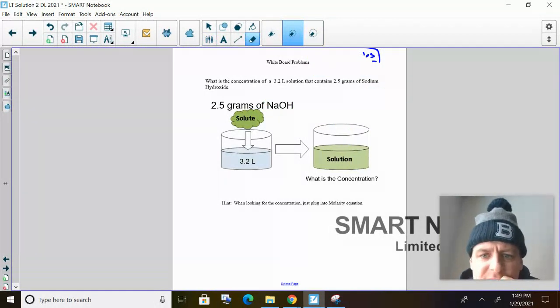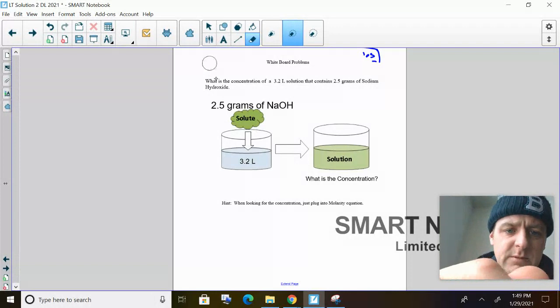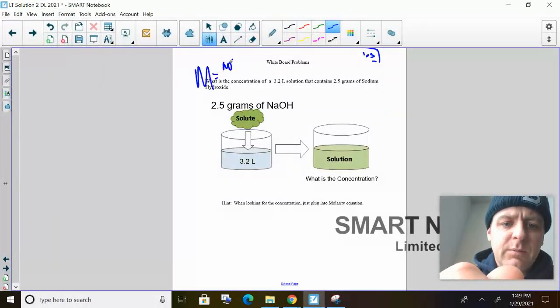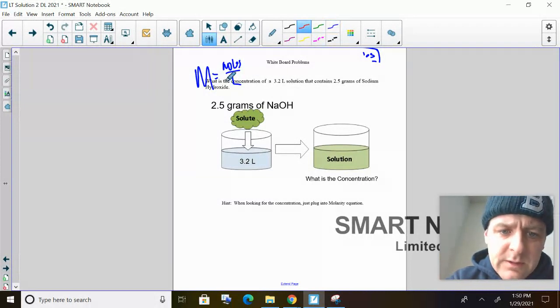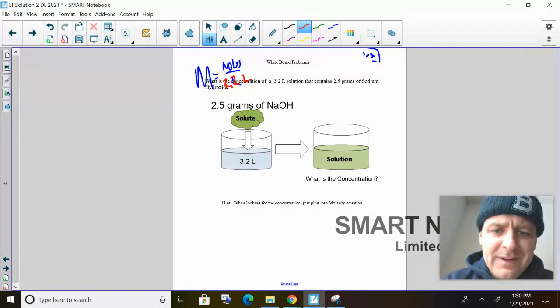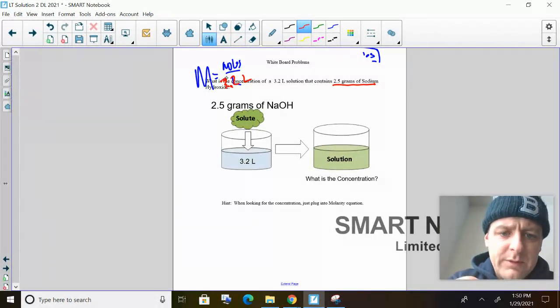So what's the concentration of a 3.2 liter solution that has 2.5 grams of sodium hydroxide? So concentration is, we want to find big M, which is moles over liters. So we know this, 3.2 liters, done. I got that. I can't just put grams in there. I got to get it to moles. So I got to do my math.